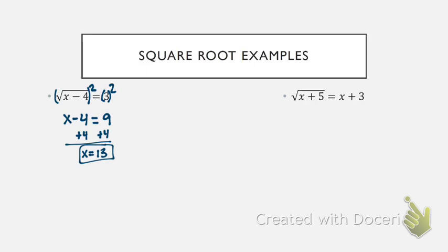So squaring the left side got rid of the square root sign, and squaring the right side just left us with 3 squared. Then we add 4 to both sides, and we get an x value of 13. The second example over here is kind of the worst case scenario for us in this unit.